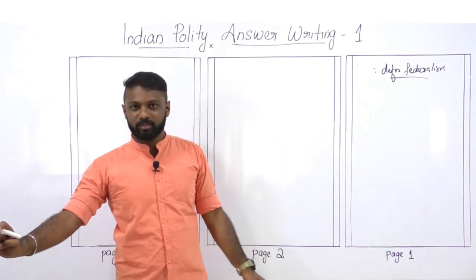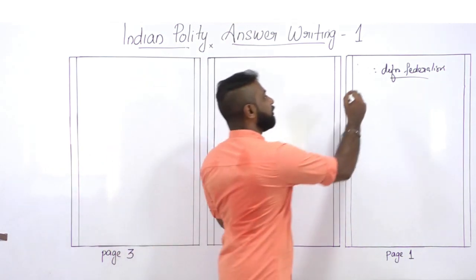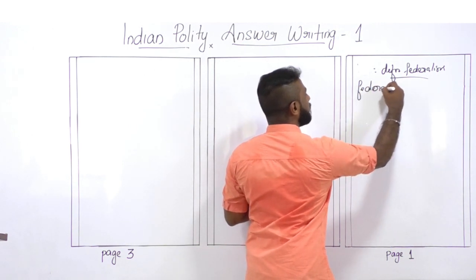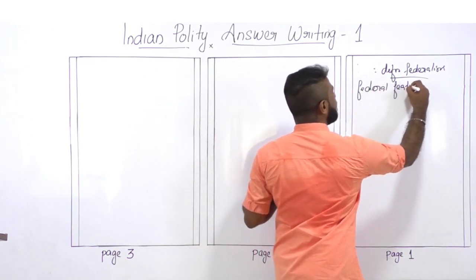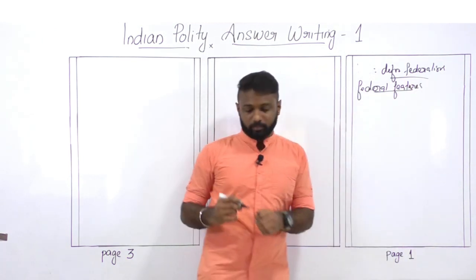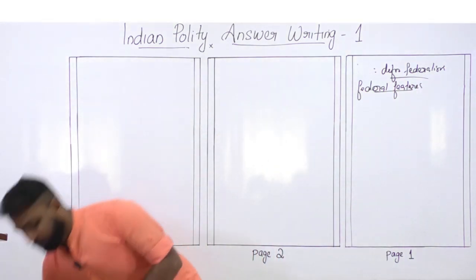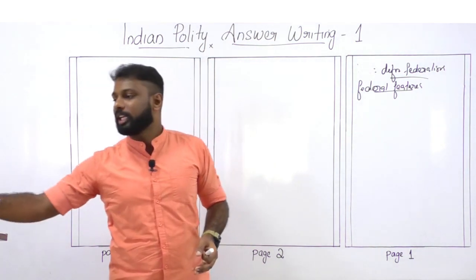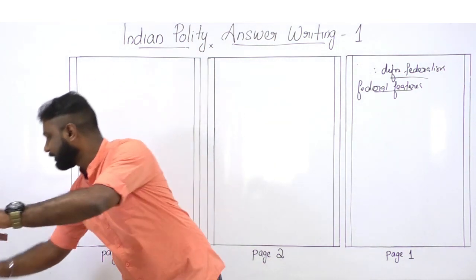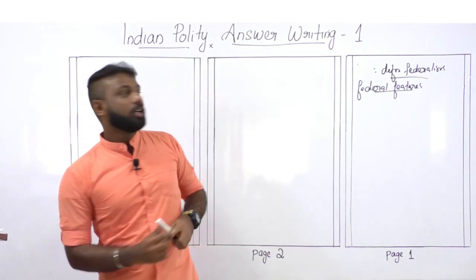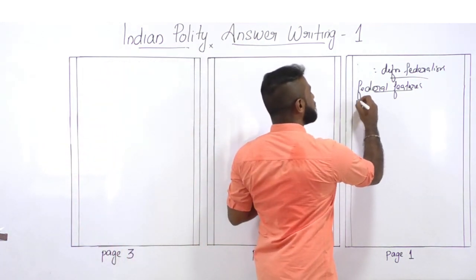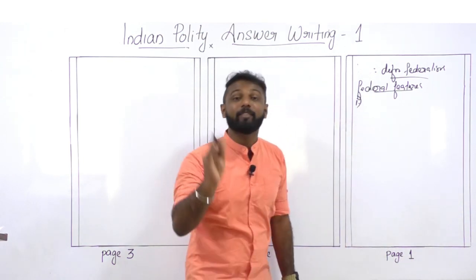Now we enter the body part. Give subheadings to your body parts. The first subheading will address the federal features of the Indian Constitution. Try to write your answers in bullet points.